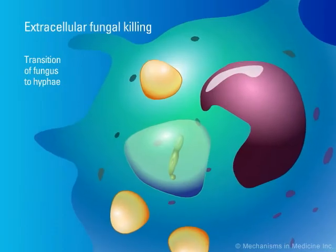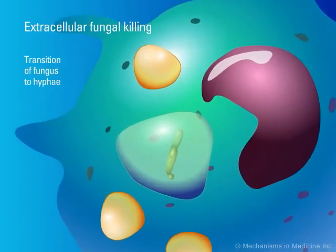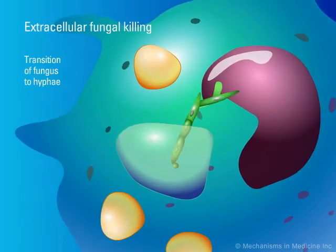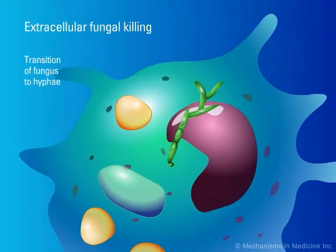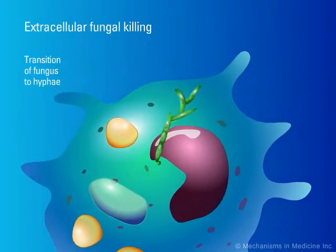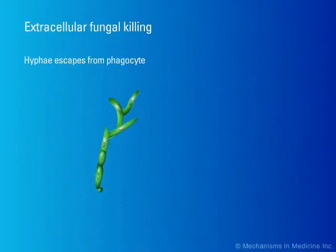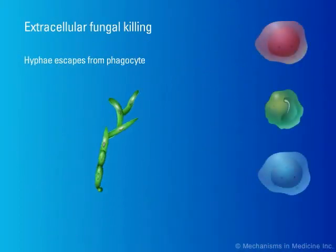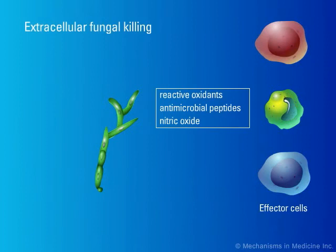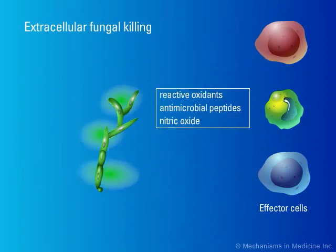Some fungi escape intracellular killing and transition to hyphae. Other fungi grow extracellularly and are never phagocytosed at all. Effector cells attack extracellular fungi by releasing reactive oxidants, antimicrobial peptides, and nitric oxide.